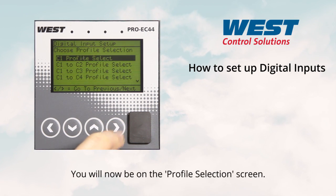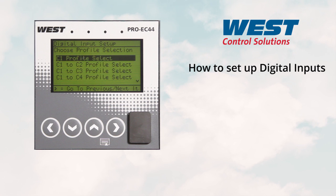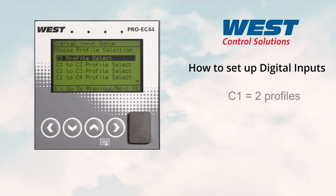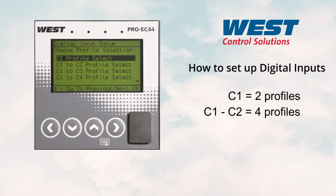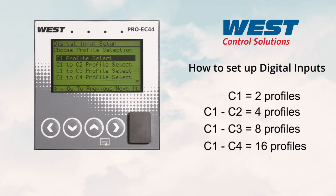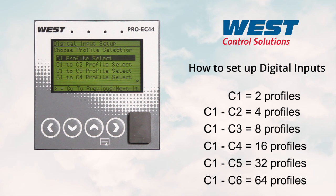You will now be in the profile selection screen. Please note that this screen will not show if you selected none on the previous profile selection screen. Choose the profile selection for how many profiles you want to control through digital inputs: C1 equals 2 profiles, C1 to C2 equals 4 profiles, C1 to C3 equals 8 profiles, C1 to C4 equals 16 profiles, C1 to C5 equals 32 profiles, C1 to C6 equals 64 profiles.